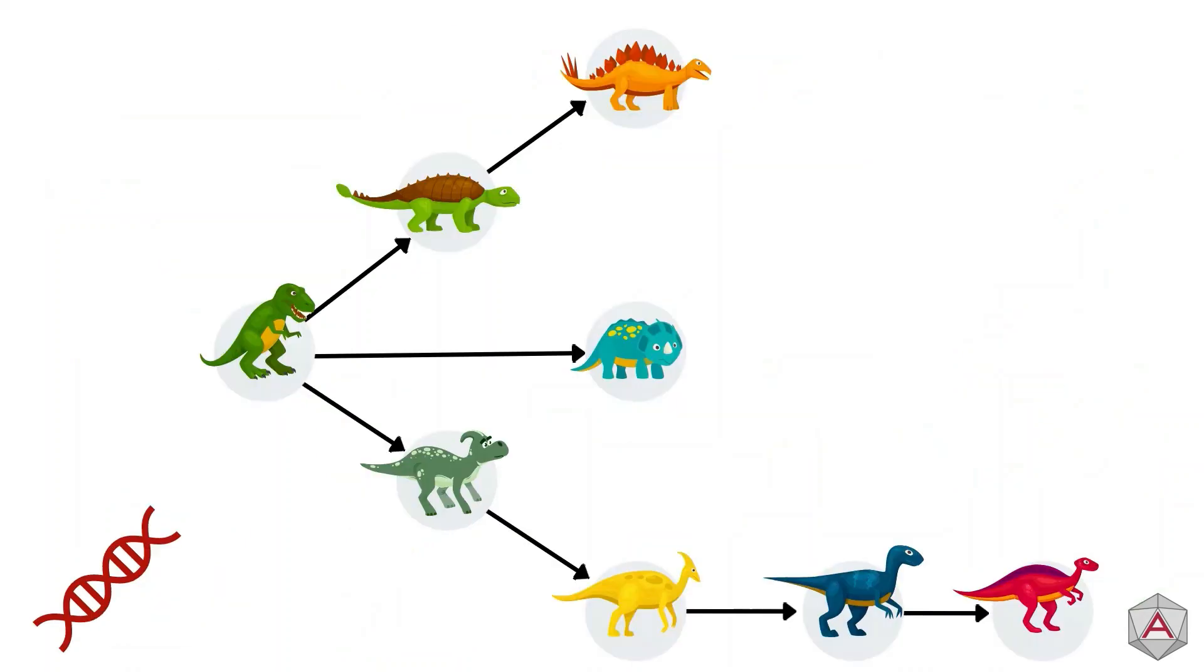An evolution tree is an example of a directed graph. We can show the direction of evolution and calculate the number of hops between two dinosaurs.